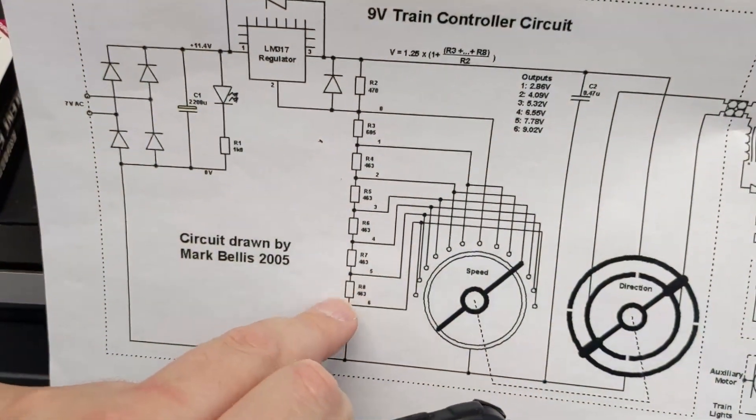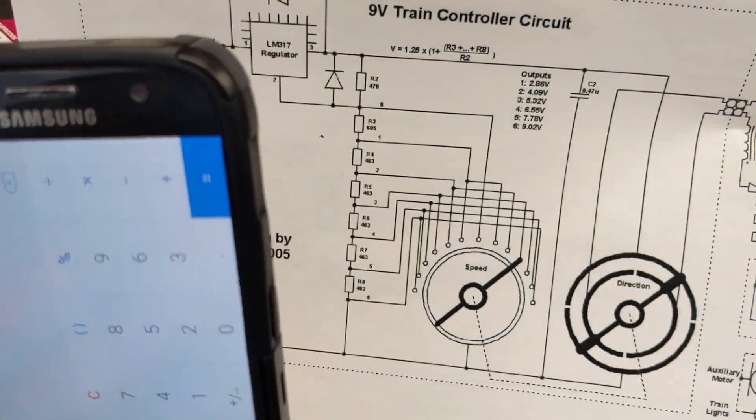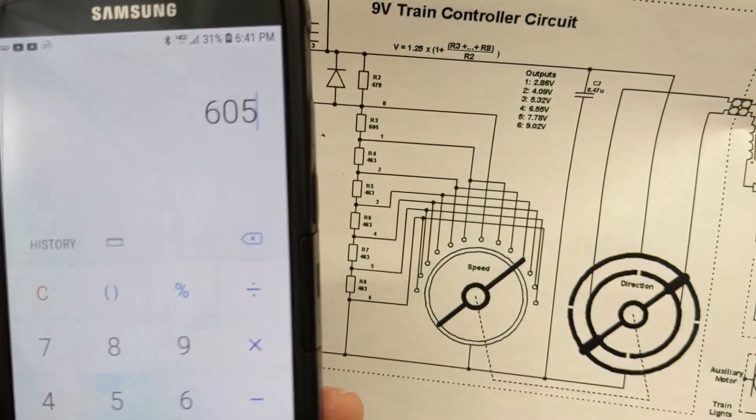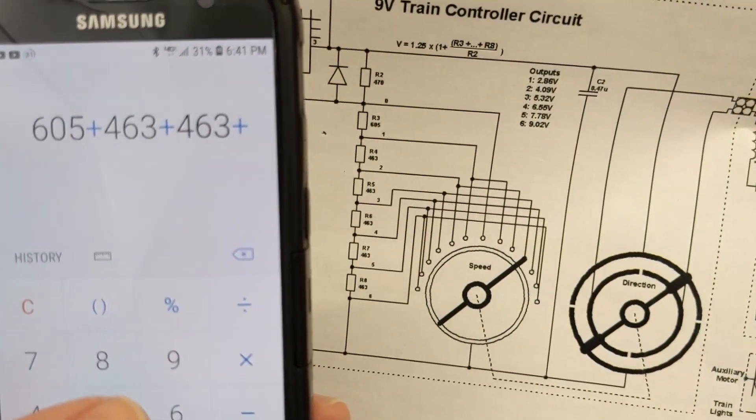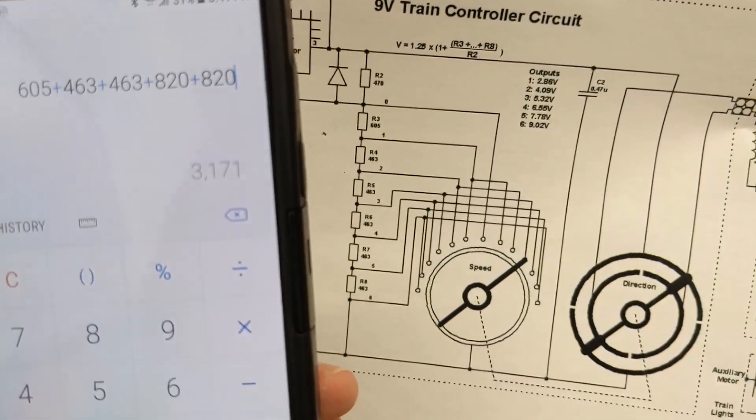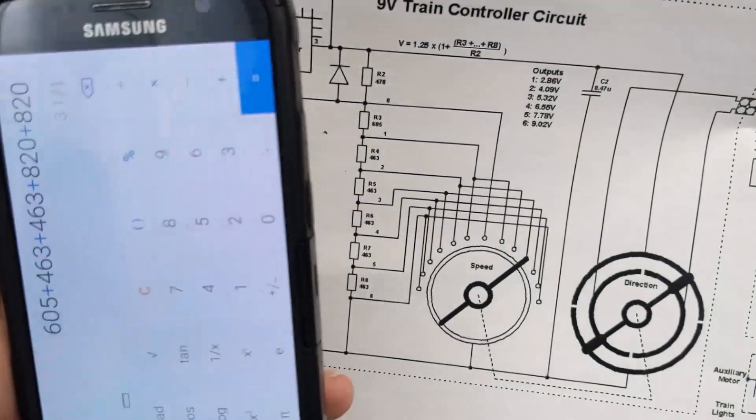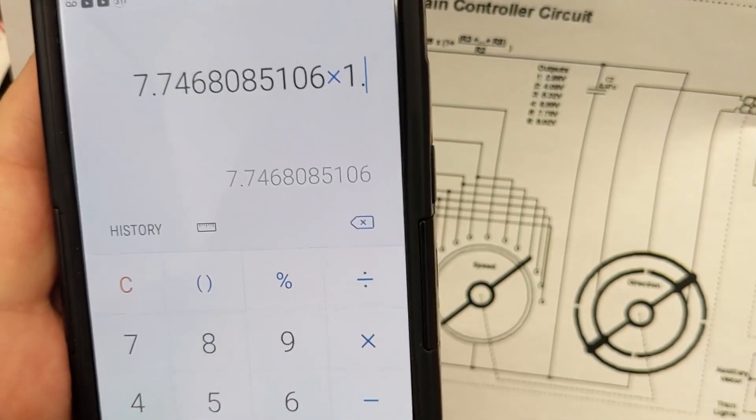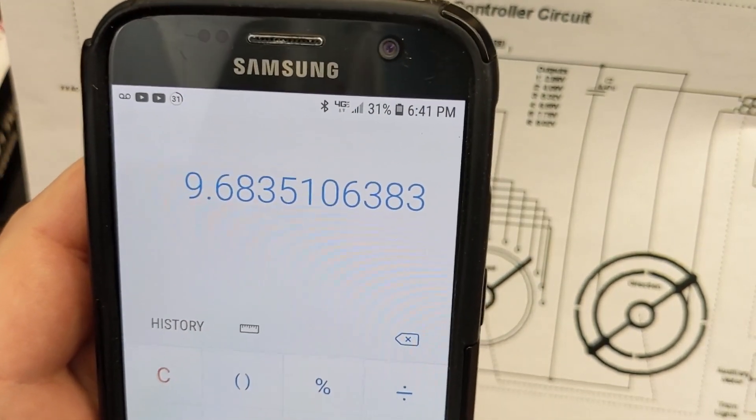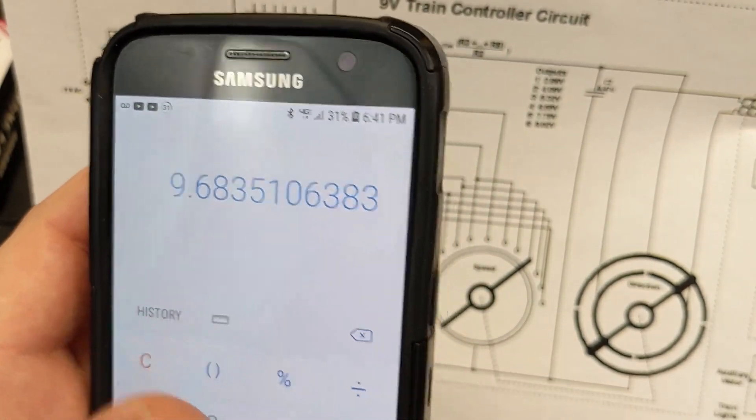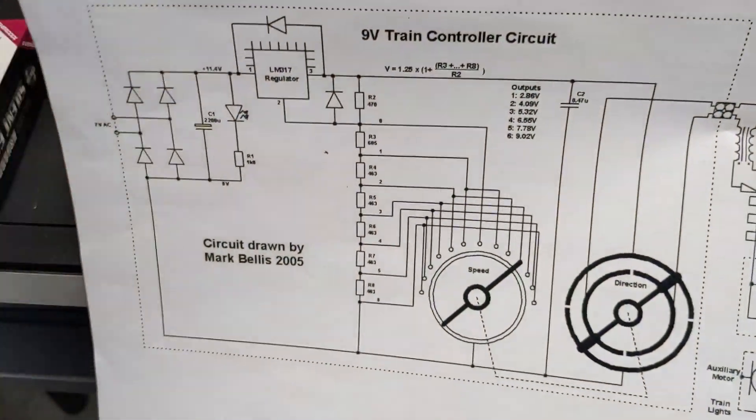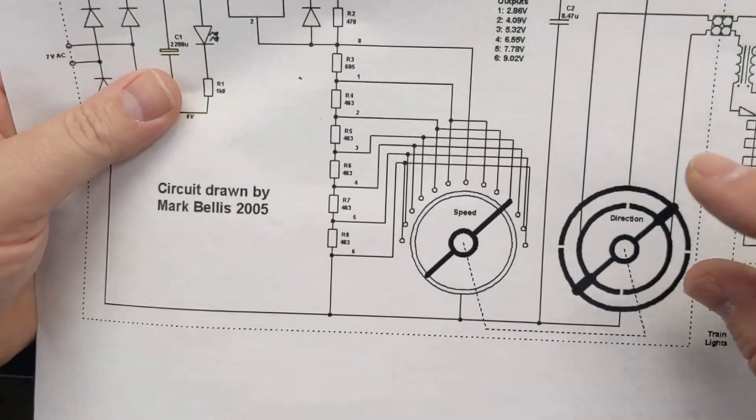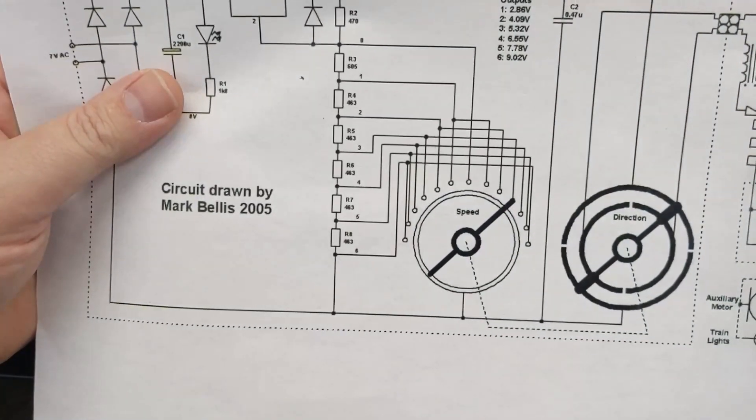And just for one more thing, let's check where it's at on the second to the highest setting. So 605, 463, 463, and then 820 twice, because we are not going to be bypassing this last one here. Divide by 470, plus 1, times 1.25 equals 9.68. So about 9.7 volts. So that actually isn't far off from the stock train regulator. So I like that, that it's just a tad above 9 volts, and then we've got the option to go just a little bit under 12 volts.